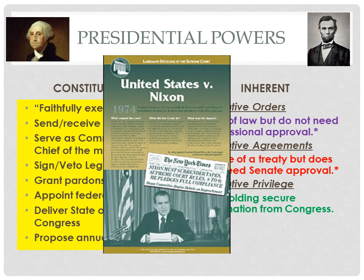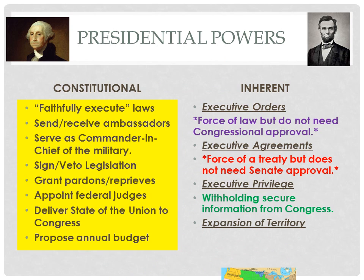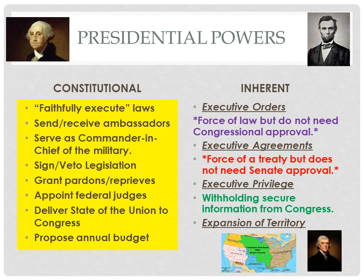Executive privilege became a highly disputed power in the Supreme Court decision of United States v. Nixon, in which President Richard Nixon tried to claim that he could use executive privilege to withhold tapes from Congress that implicated him in the Watergate break-in. The Supreme Court ruled unanimously that executive privilege cannot be used to cover up crimes. Finally, expansion of territory is considered an inherent power, as Thomas Jefferson used this power during the Louisiana Purchase.